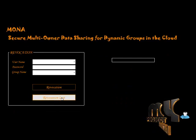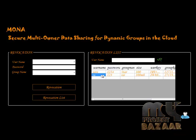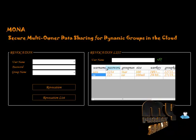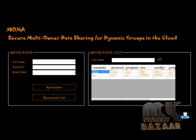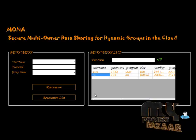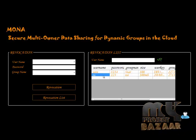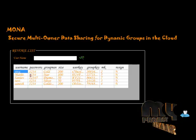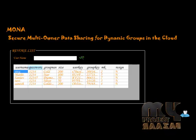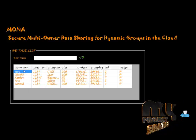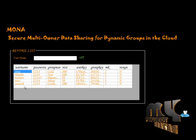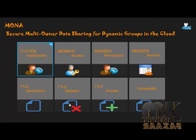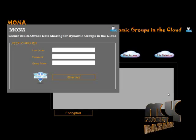Now checking the revocation list — there are two users in the revocation list. SA and RA are in the revocation list, so they are not allowed in the multi-user group member part. These are the revoked users. File generations, file releases, file sends, and file deletions are shown. Let us see the user model.